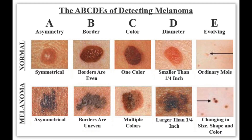A stands for asymmetry — as I told you, normal moles should be round. B stands for borders: are there any irregularities, edges, or corners? There should be none. C stands for colors: does your mole have multiple colors it did not have before, like red, white, or black? D stands for diameter: if your mole becomes larger than six millimeters. E stands for evolving over time: does your mole change? And F stands for funny looking — which basically means that if your mole starts to look funny, get it checked out.